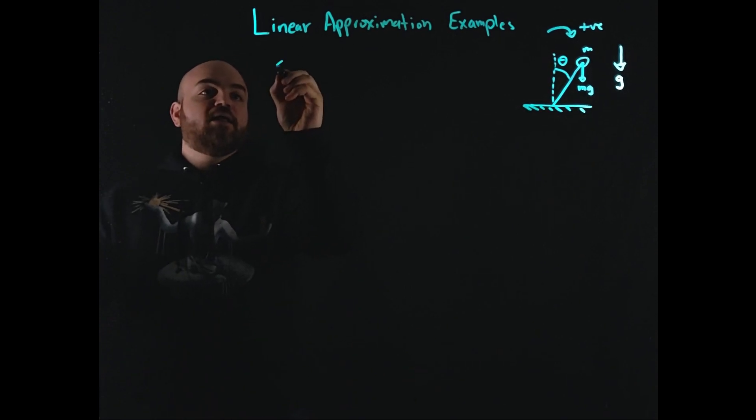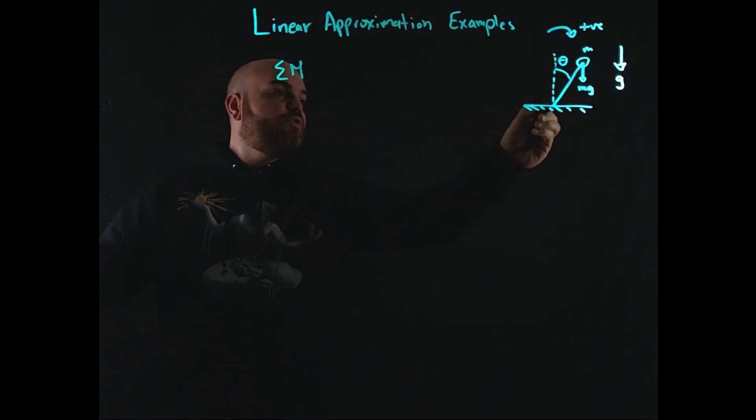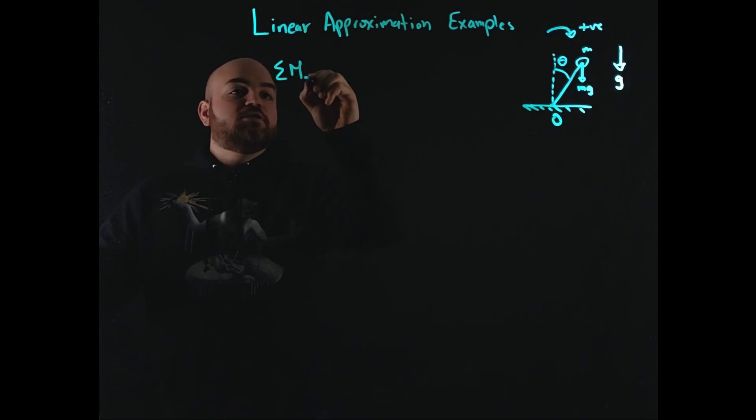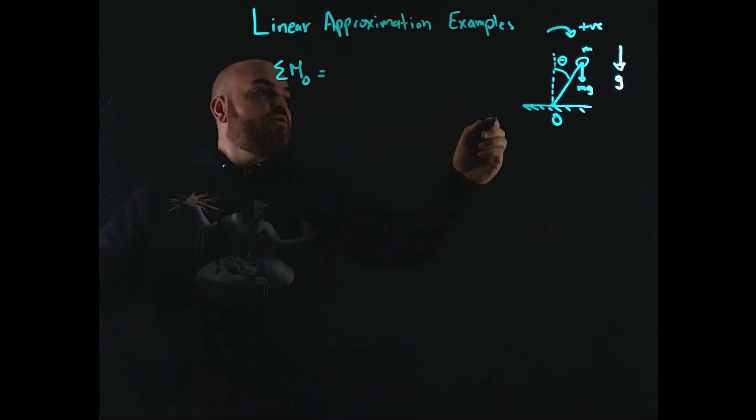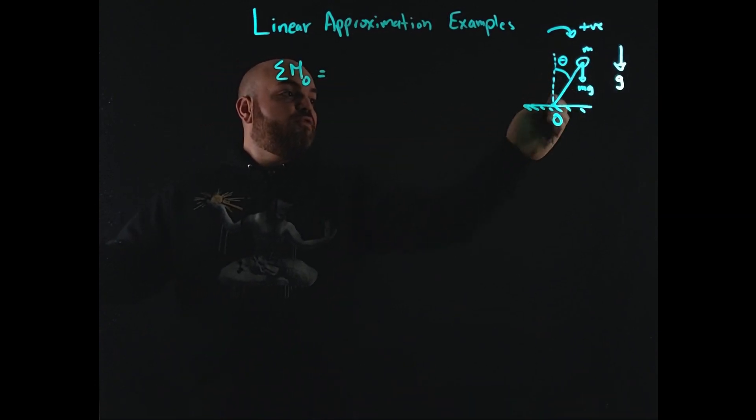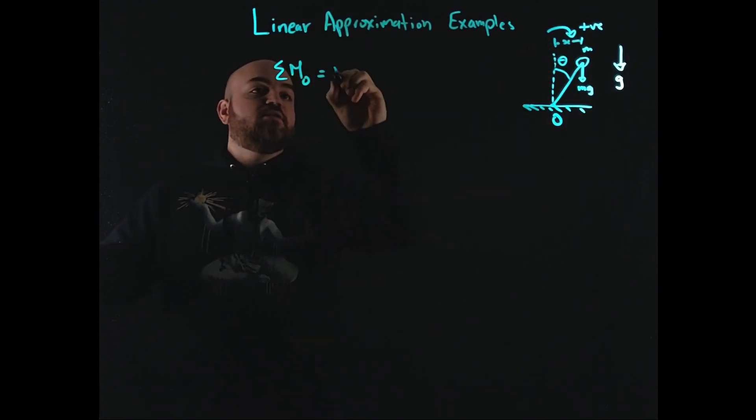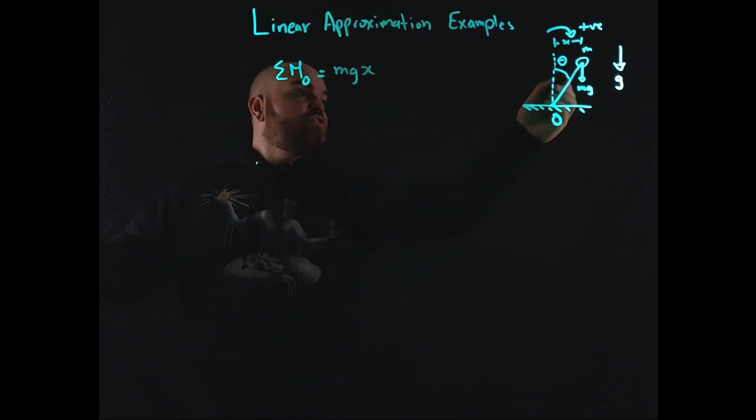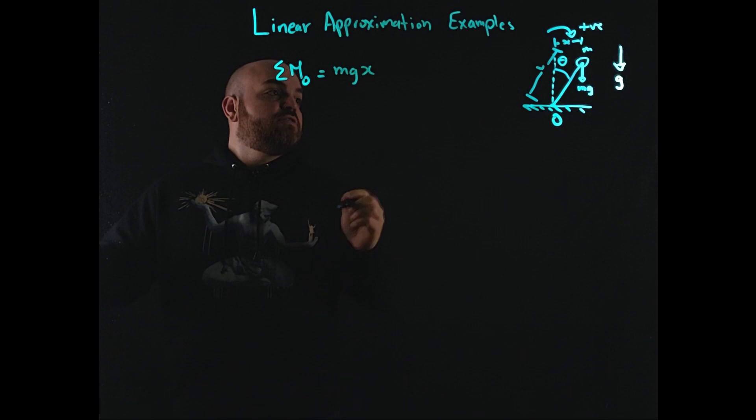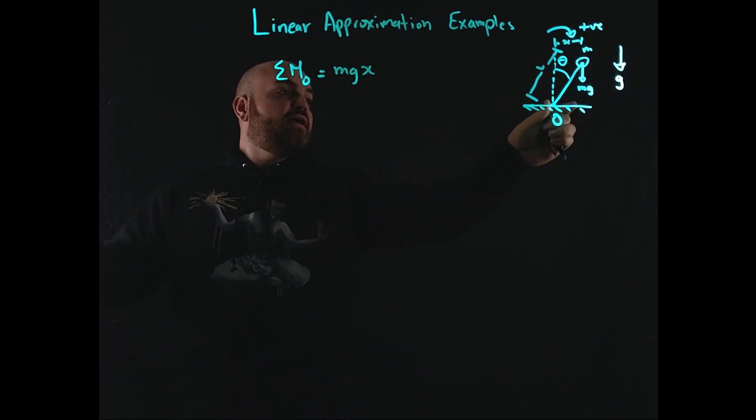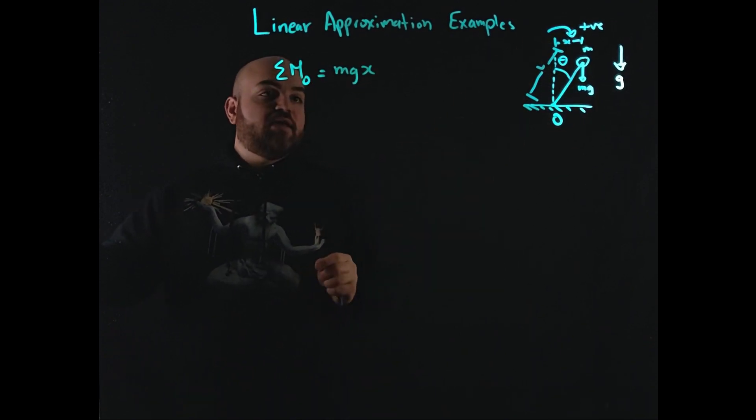So we do that by writing the summation of moments around this point here. Let's call that O. The summation of moments about O is going to be mg, the force, times this distance here. So this distance here, let's call it x, right? So that's going to be mgx. Now what is x? So there's a length here of this pendulum itself. Let's call it L.